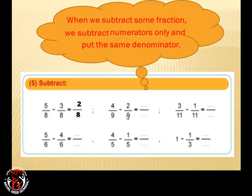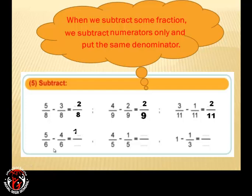4 over 9 minus 2 over 9: 4 minus 2 equals 2, and 9 stays 9, so the answer is 2 over 9. Next: 3 over 11 minus 1 over 11 equals 2 over 11. And 5 over 6 minus 4 over 6: 5 minus 4 equals 1, the denominator stays 6, so the answer is 1 over 6.